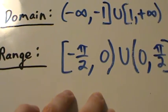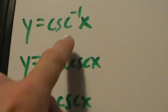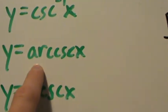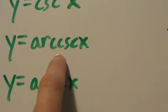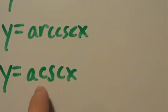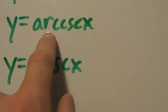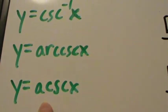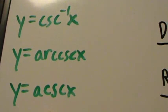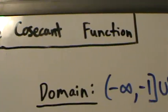Notation: the inverse cosecant of x can be written with that negative 1 in the exponent, or we could say arc cosecant of x, or a cosecant of x for short — where that 'a' is just short for arc. It's not quite as common as it used to be, but people will know what you mean. These are three different ways of saying exactly the same thing — the inverse cosecant function.